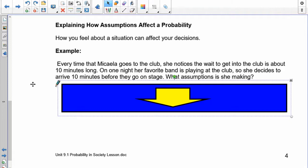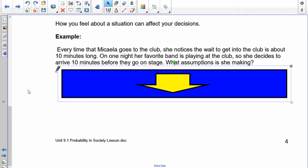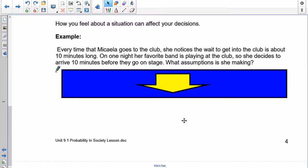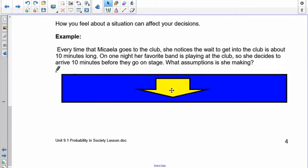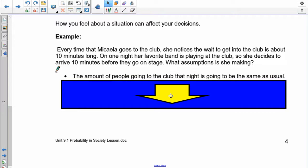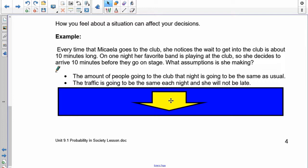Explaining how assumptions affect your probability. How you feel about a situation can affect your decision. For example, let's take a look at this one here. Every time that Mikayla goes to the club, she notices the wait to get into the club is about 10 minutes long. So, she lines up inside the club, and after 10 minutes, she gets in. On one night, her favorite band is playing at the club, so she decides to arrive 10 minutes before they go on stage. What assumptions is she making? So, I'd like you to pause the recording and write down what are the assumptions that she's making. How many? I'd say equal to two or three of them. So, pause the recording and do that. The amount of people going to the club that night is going to be the same as usual. So, she is making the assumption that there's not going to be more or less people than would normally be going on the night that her favorite band is playing. She's also assuming the traffic is going to be the same each night, and she will not be late. For example, she's assuming that she needs to arrive 10 minutes before they go on stage. So, she has to time her driving and getting to the club, so that when she gets there, she's going to be 10 minutes before they go on stage.